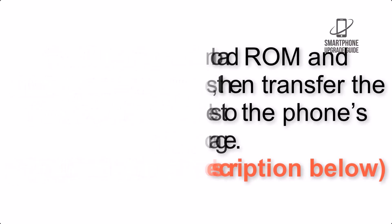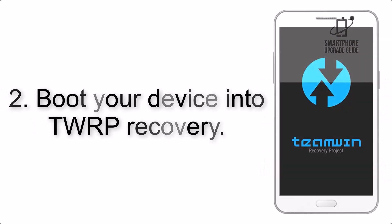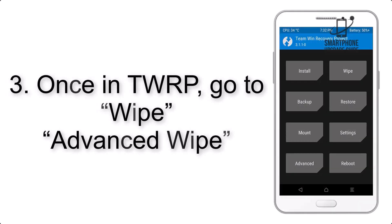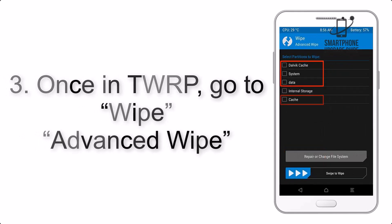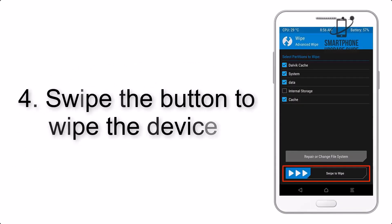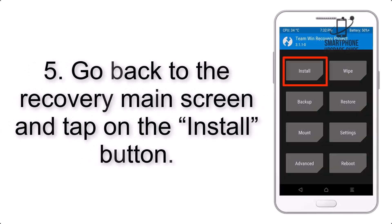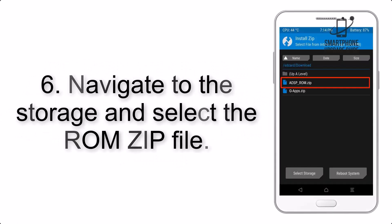Step 2: Boot your device into TWRP recovery. Once in TWRP, click on Wipe, then Advanced Wipe, and select the checkboxes as shown in the image, excluding internal storage. Step 4: Swipe the button to wipe the device.